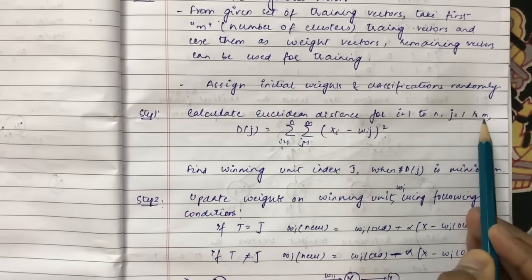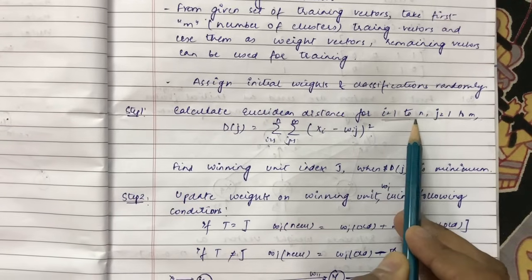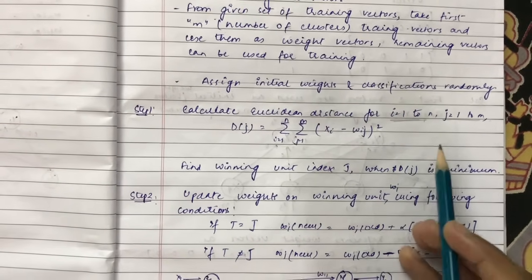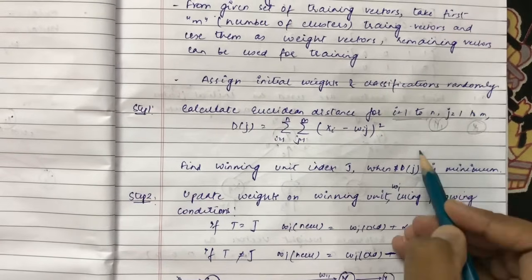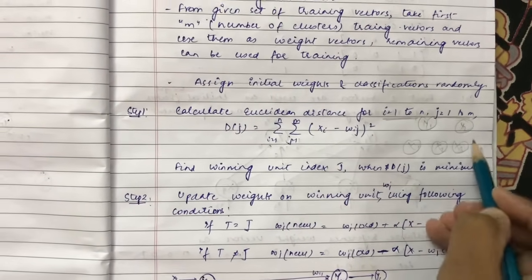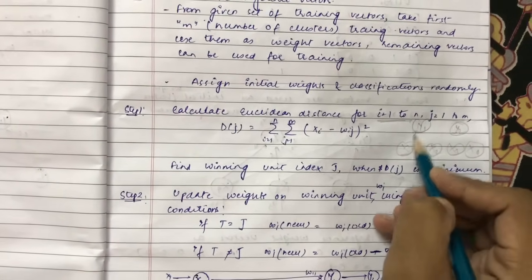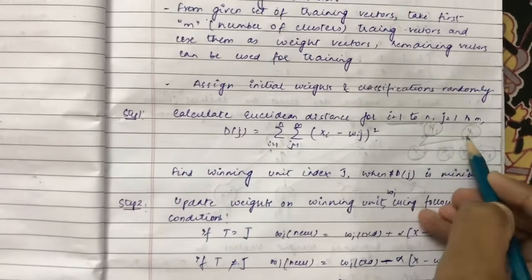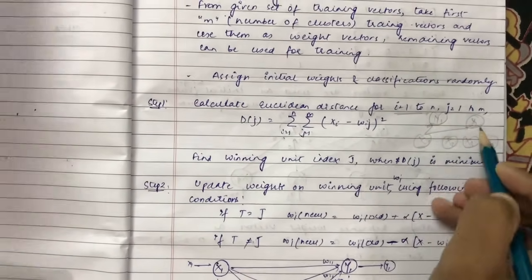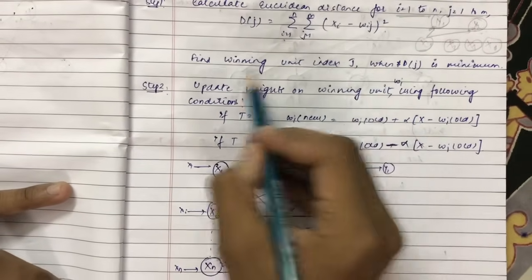Step one is to calculate the Euclidean distance for i = 1 to N and j = 1 to M, where j = 1 to M represents the number of clusters and i = 1 to N represents the number of input vectors. You have to calculate the square of the Euclidean distance between every input vector and each cluster unit. For example, if we have four input vectors and two clusters, we calculate the distance of x1 with y1 and y2, and whichever distance is lower, that cluster is called the winning cluster.